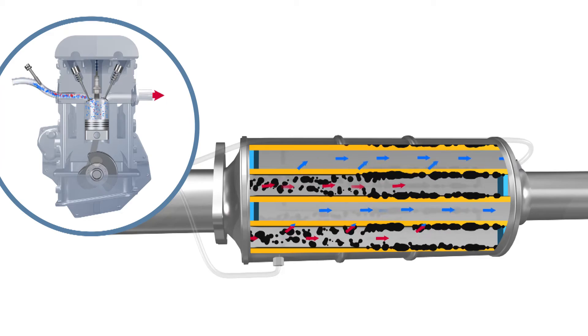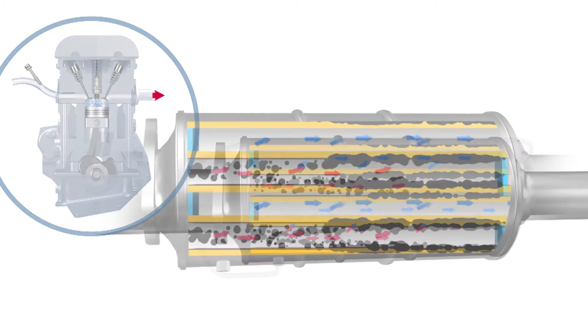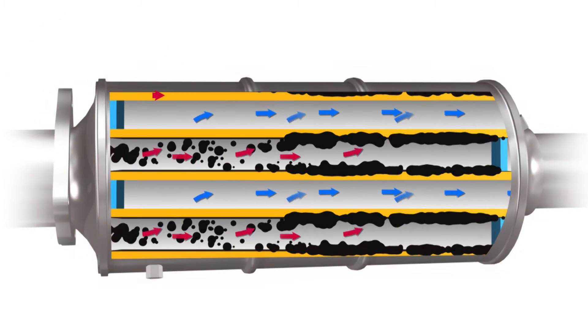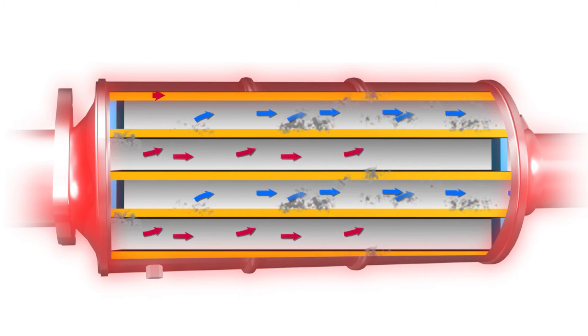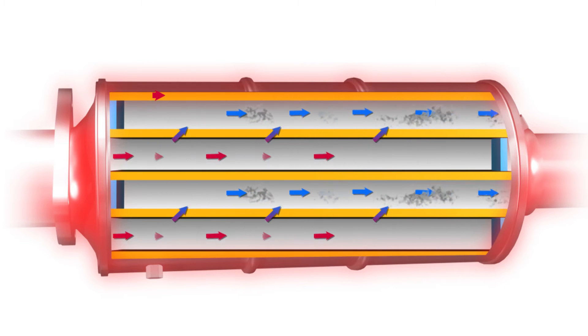One of the main purposes of the DPF is to collect particulates from the engine exhaust in order to minimise discharge of soot to the atmosphere. The soot particles accumulate in the channels of the DPF and are burned off at regular intervals through a process called regeneration. This prevents the DPF from clogging.